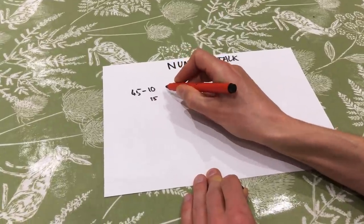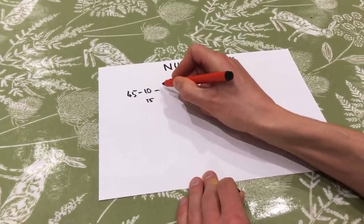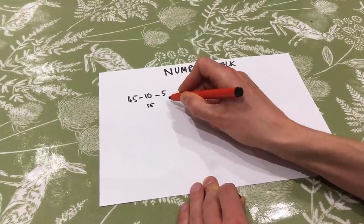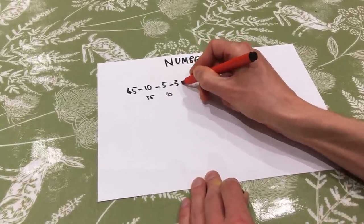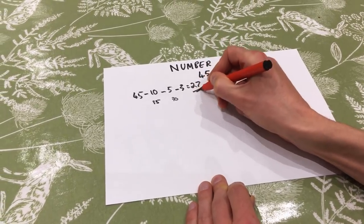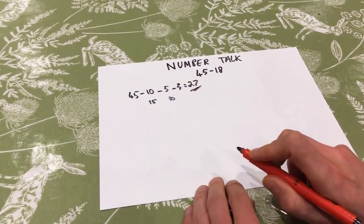And then I've got to subtract another eight. So I start off by taking away a five and that will give me 30, and then I'll take away another three, and that gets me to 27. So quite a lot of steps there to track in your mind, but that was one way.